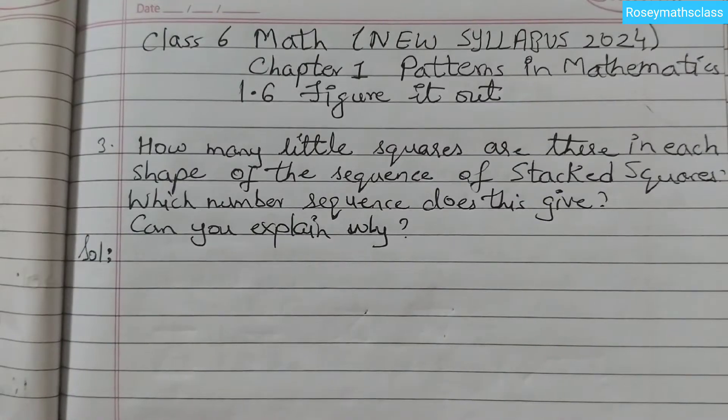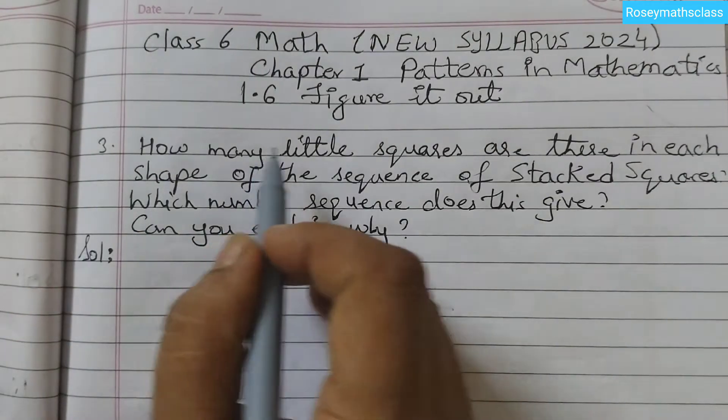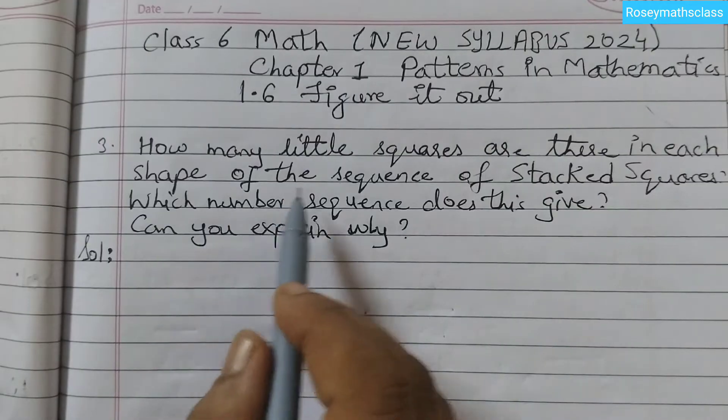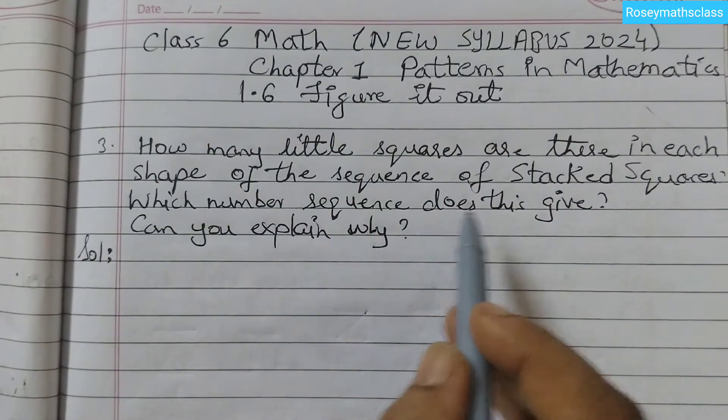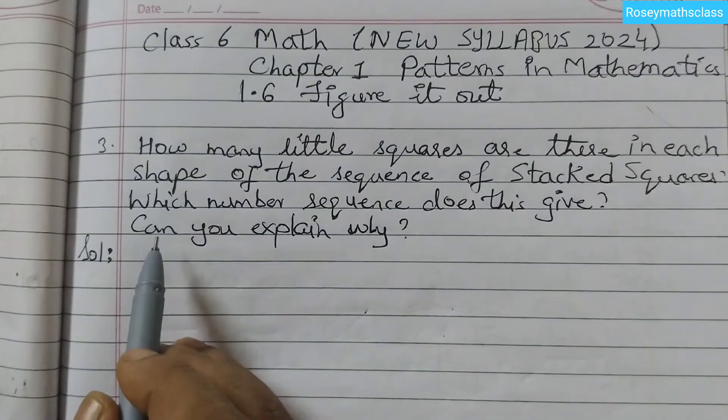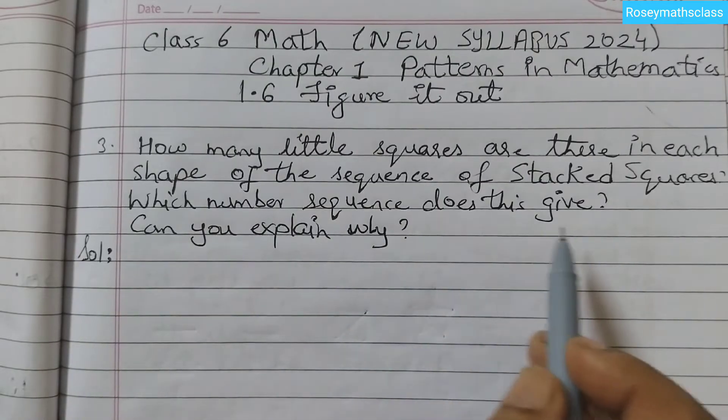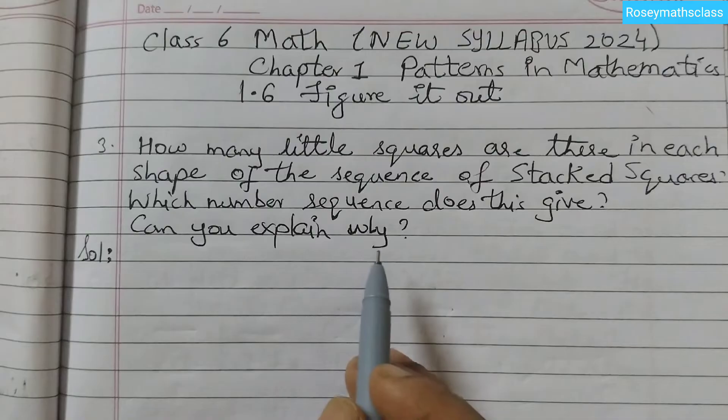Hello students! Today we shall discuss question number 3 of 1.6 figure it out. How many little squares are there in each shape of the sequence of stacked squares? Which number sequence does this give? Can you explain why?